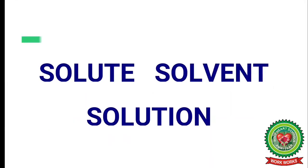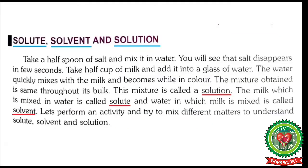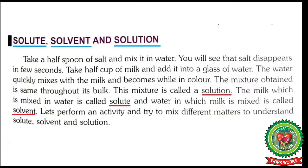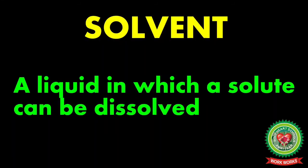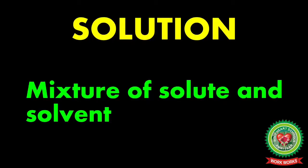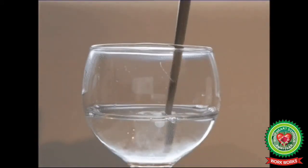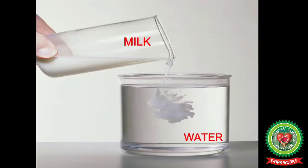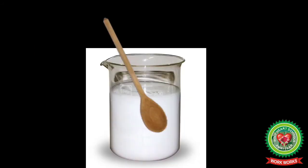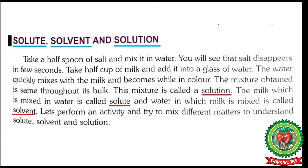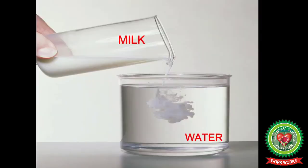Now let's move to the next topic: solute, solvent, and solution. Underline 'solute' — a solid that is soluble in a liquid. Underline 'solvent' — the liquid in which the solute dissolves. Underline 'solution' — a mixture of solute and solvent. For example, salt mixed in water dissolves in seconds, and milk mixed into water quickly blends to form a uniform white mixture — this is a solution.